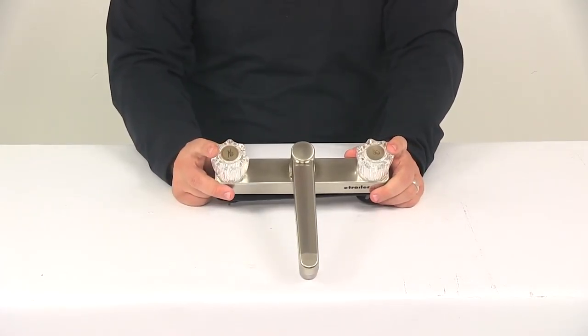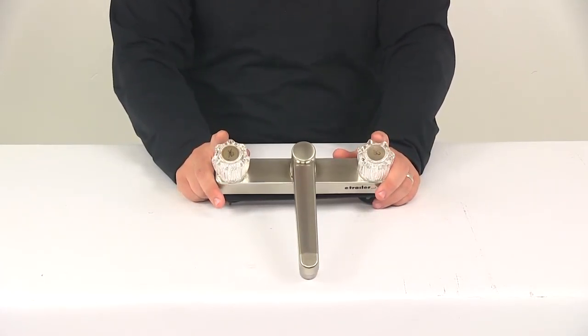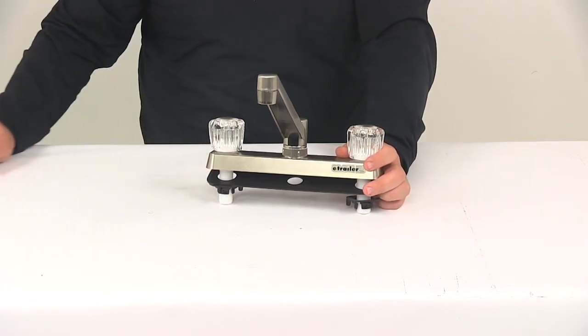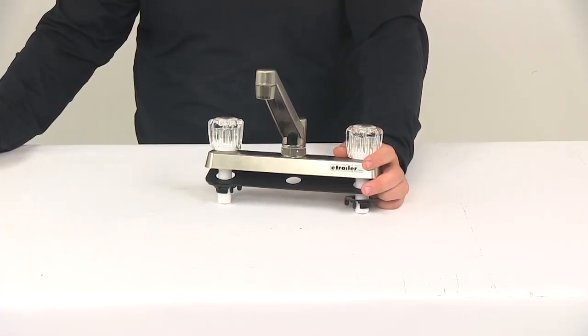On the acrylic handles, one of them is going to say H, the other one is going to say C, so it's going to indicate hot and cold. That's going to do it for today's look at the dual handle RV kitchen faucet from Ultra Faucets.